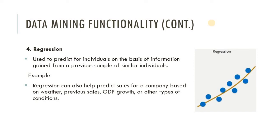Regression can also predict the sales for a company based on weather, previous sales, GDP growth, or other conditions. Here we have to predict the sales of a company — the sales depend on many factors like weather, previous sales, and GDP growth. Based on that previous data, we predict the current sales. This process is called regression. In simple words, regression is used to predict the current value based on the previous value.